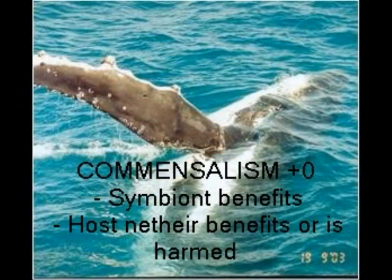The last relationship, called commensalism, is a relationship between the host and the symbiont where the symbiont benefits and the host is neither helped nor harmed. The symbiont benefits by receiving transportation, housing, or even nutrition. For example, the symbiont is the barnacles — if you look at the whale's arm, those little bumps are barnacles. They receive transportation from the whale, since they aren't able to move through the water as quickly. When the whale goes for a ride, the barnacles get transportation, and the host whale is neither helped nor harmed — he or she probably doesn't even know they're there.